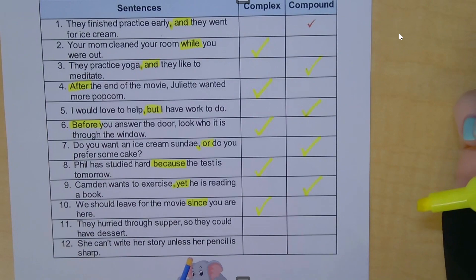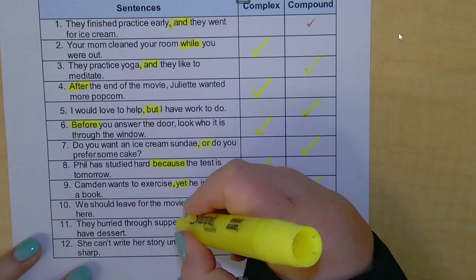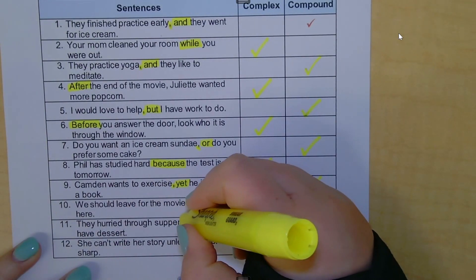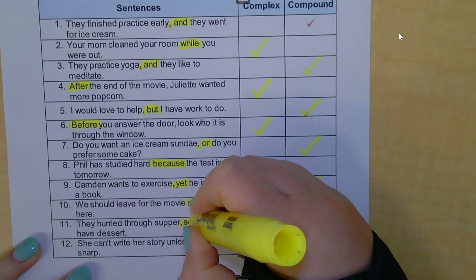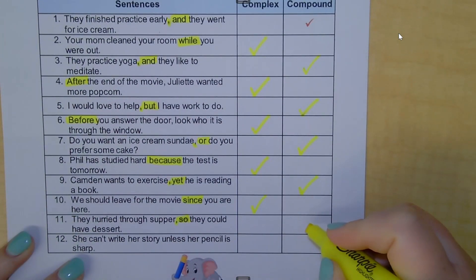Number eleven: 'They hurried through supper, so they could have dessert.' I see a comma and a coordinating conjunction — a FANBOY — so this is a compound sentence.